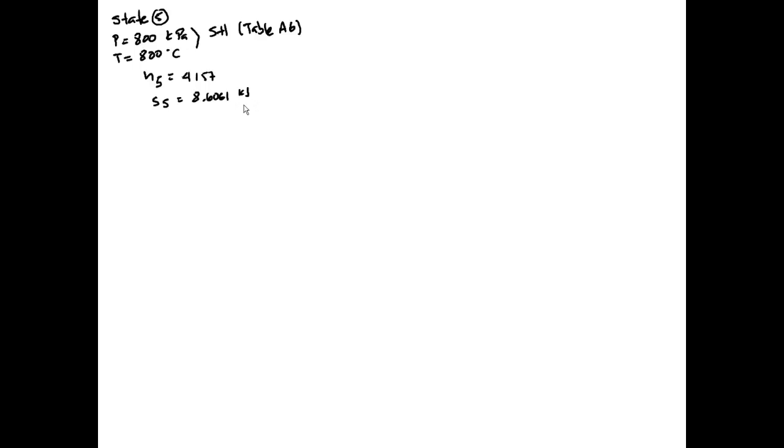State 6S: we know that pressure is 10 kilopascal - we don't have any pressure drop in the condenser. s6 equals s5, which is 8.661 kilojoules per kilogram Kelvin. This is superheated vapor since s6 is greater than s_g at 10 kilopascal.